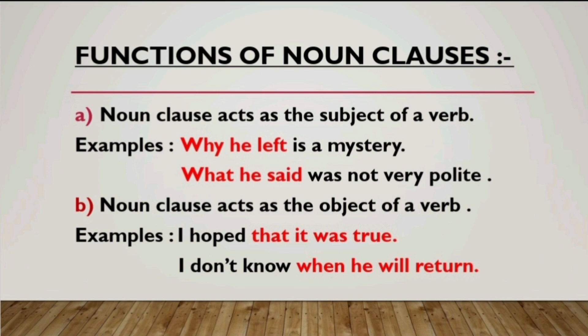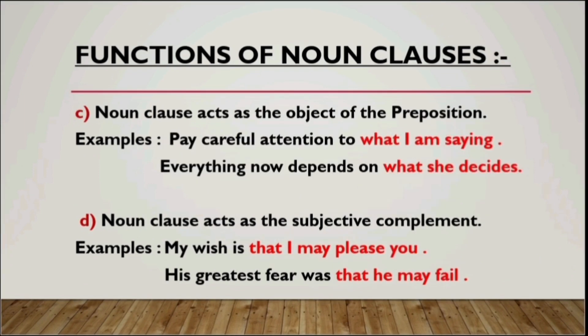The next function is that a noun clause acts as the object of the verb. For example, 'I hope that it was true' — here the noun clause 'that it was true' is acting as the object of the verb 'hope.' Similarly, 'I don't know when he will return' — here 'when he will return' is acting as the object of the verb 'know.' So a noun clause can act as the object of the verb.